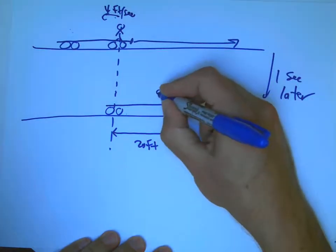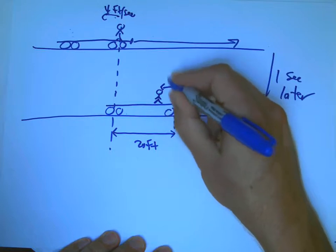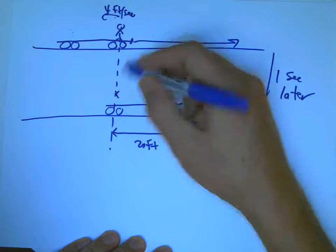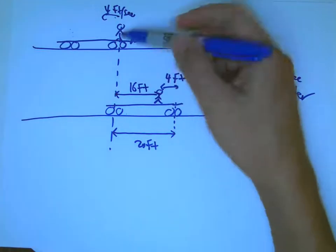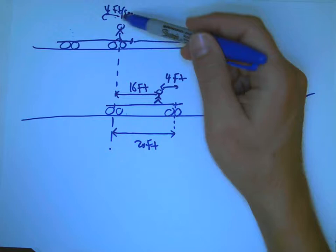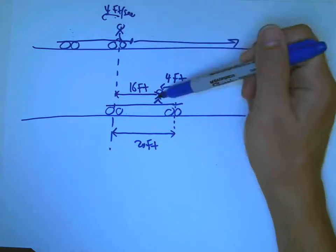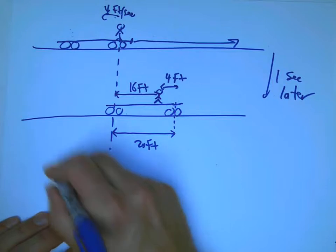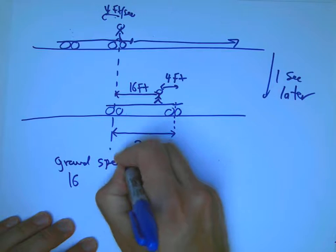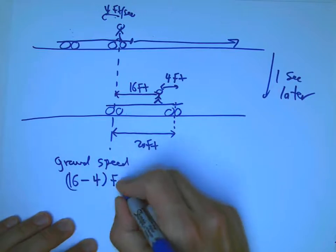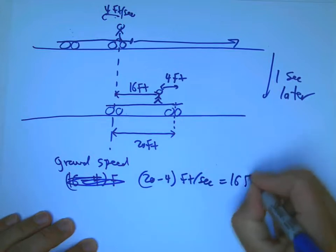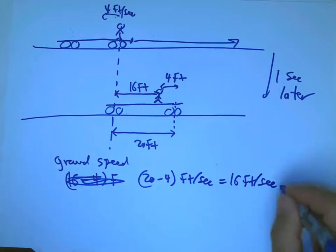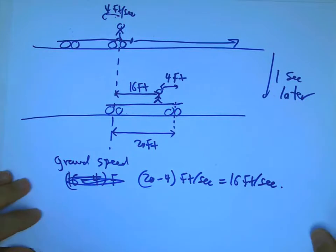But he was moving this way at 4 feet per second, so he's right here. This distance is 4 feet. So according to the ground observer, he saw the guy here and now he sees him here. And now it's just 16 feet. So according to the ground observer, all he sees is that this guy moves 16 feet in one second. And so now his ground speed, 20 minus 4, which is 16.